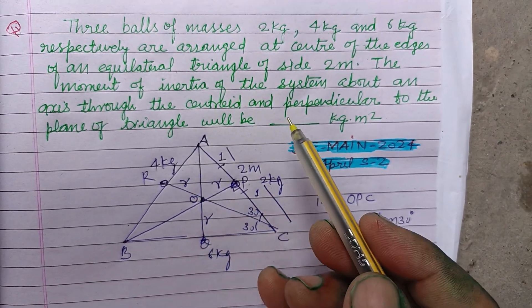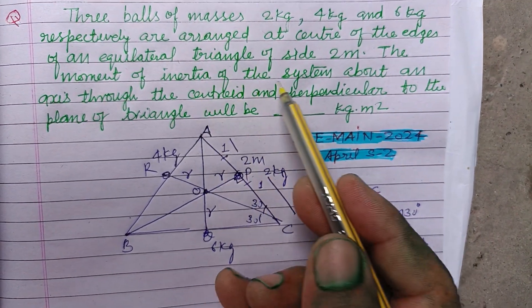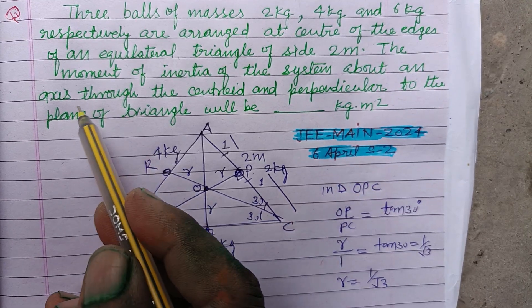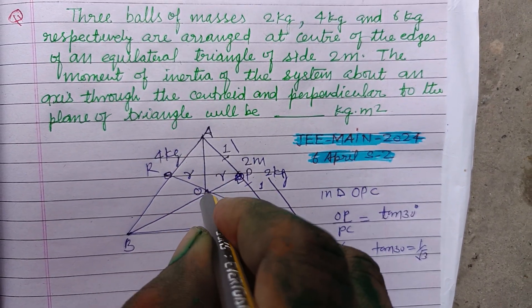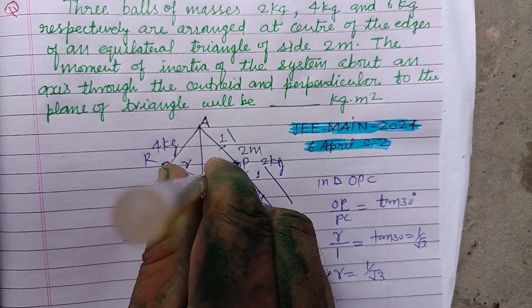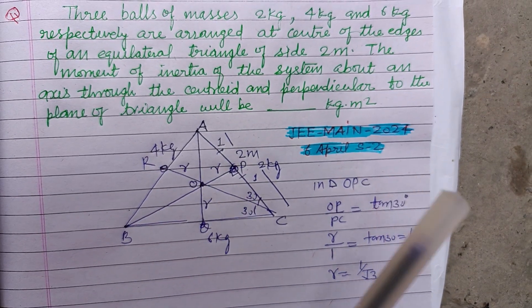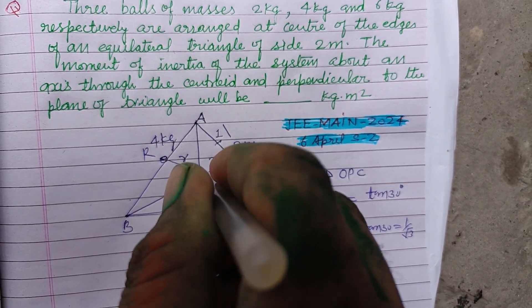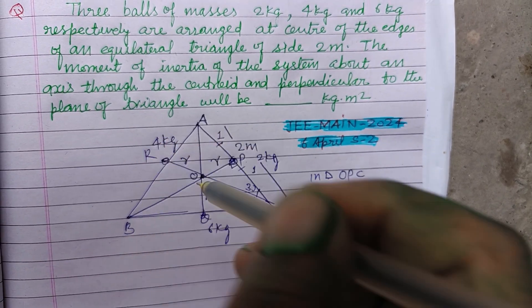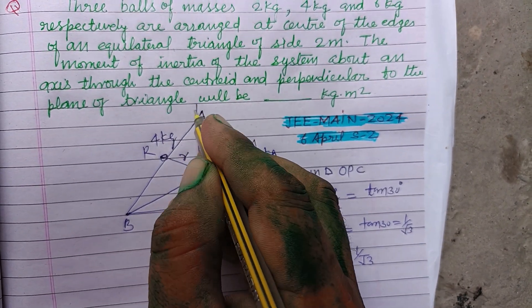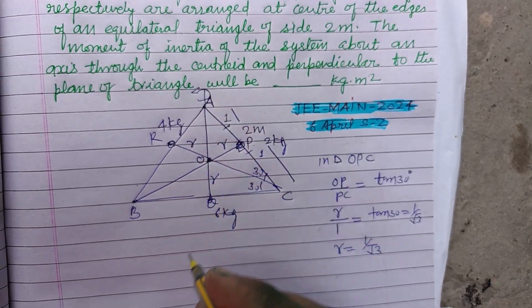Now, the question is saying to find the moment of inertia of the system about an axis through the centroid, so this centroid, and perpendicular to the plane of the triangle. So we require this rotational axis.